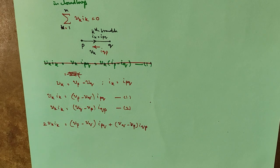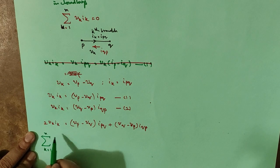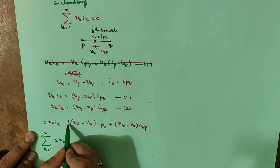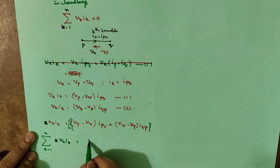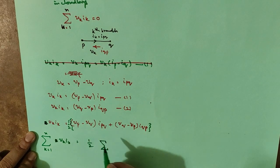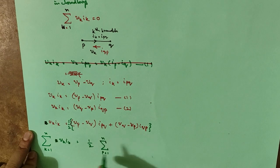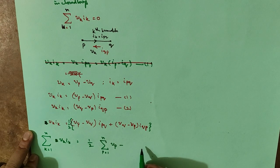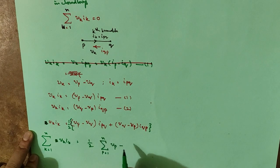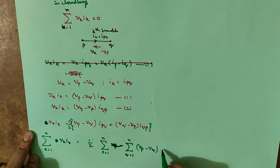Now I add these two equations: 2·Vk·Ik equals Vp minus Vq into Ipq plus Vq minus Vp into Iqp. This is the power for one branch. Now let us extend to n number of branches. Summing over k equal to 1 to n gives 2 times sigma Vk·Ik equals one-half times sigma p equal to 1 to n, sigma q equal to 1 to n, Vp minus Vq into Ipq.